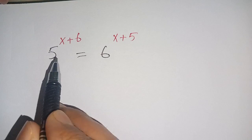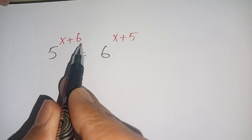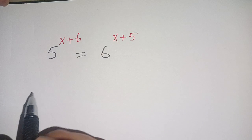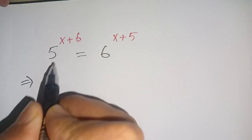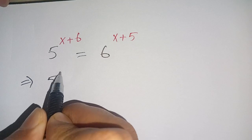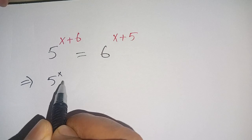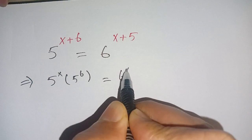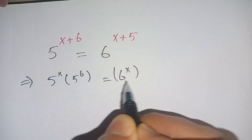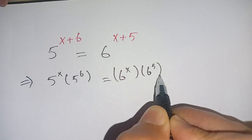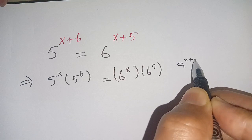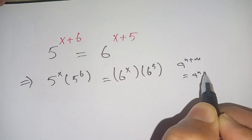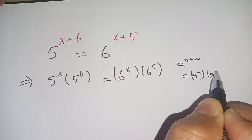Hello everyone. How to solve 5^(x+6) = 6^(x+5). We can write this as 5^x times 5^6 is equal to 6^x times 6^5, because a^(n+m) = a^n times a^m. We use this identity here.